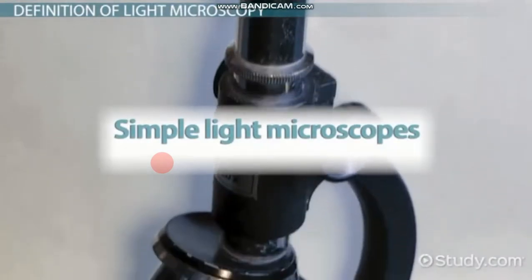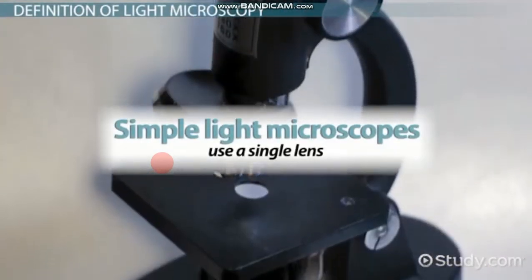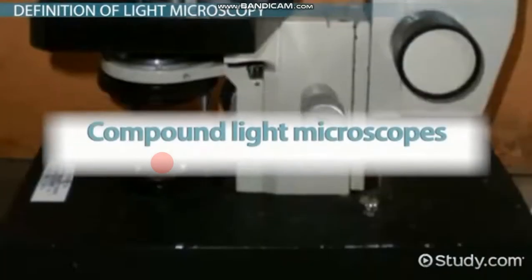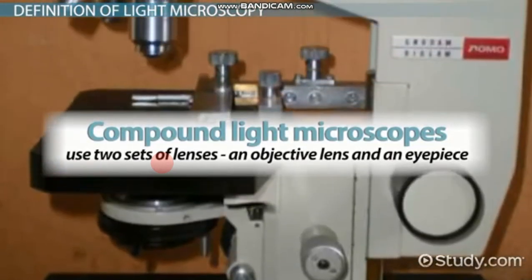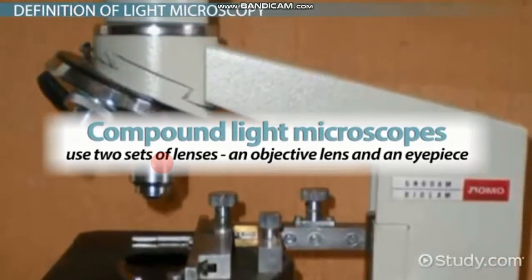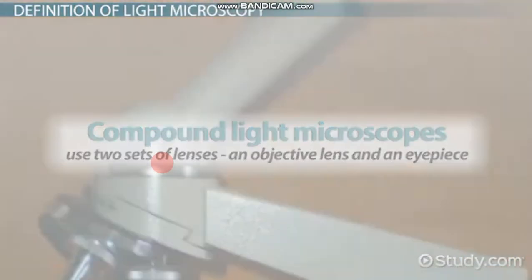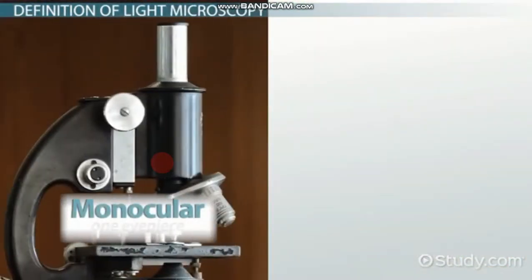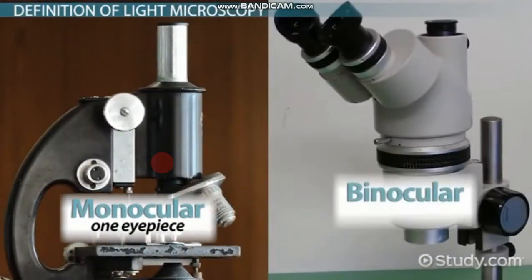Light microscopes can come in several forms. Simple light microscopes use a single lens to magnify an object and cannot reach high magnification. Compound light microscopes use two sets of lenses, an objective lens and an eyepiece, to produce images. Monocular microscopes have one eyepiece, while binocular microscopes have two eyepieces and reduce eye strain.